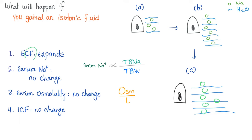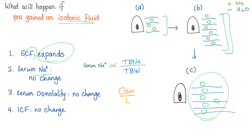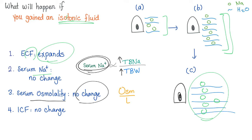What happened to the serum sodium? No change — we gained an isotonic fluid, an equal amount of water and sodium. The silver equation confirms this. What happened to serum osmolality? If serum sodium concentration is normal, osmolality is normal. What happened to the ICF? Gaining an isotonic fluid creates no osmotic gradient to pull water in or out, because we increased sodium and water equally. Osmolality didn't change, so there is no osmotic gradient. There is no change to the ICF — your cells are not going to swell or shrink.